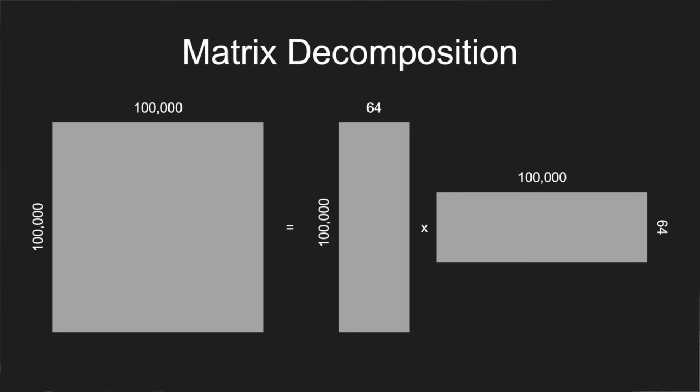Once we have this matrix decomposition—and there are plenty of methods in linear algebra to find it, like singular value decomposition or gradient descent—we get word vectors pretty much for free. In the big co-occurrence matrix, each row and column corresponds to a word. If I go into the tall, skinny matrix and grab the nth row for a certain word, that gives me a vector of, say, 64 components, which I can call a word embedding. I could also pick it from the short, wide matrix, or even average the two vectors.